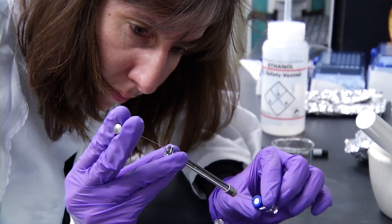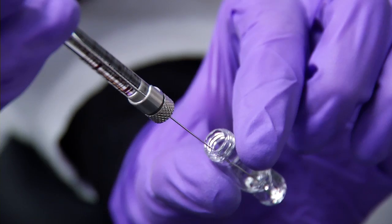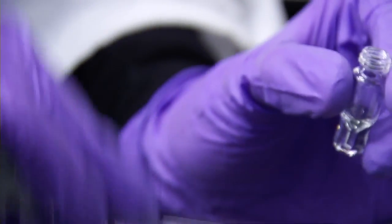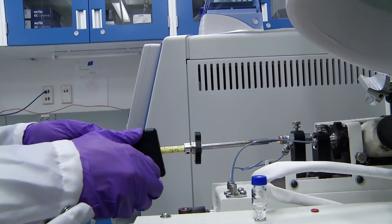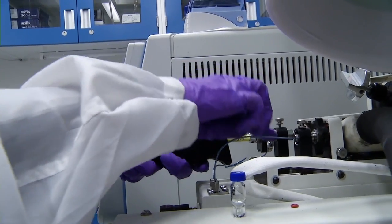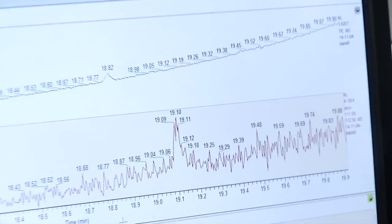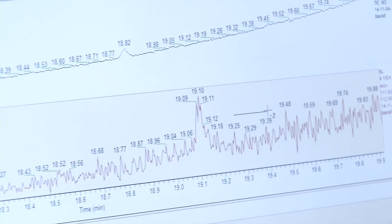In addition to the measurements made by Sam on Mars, we've had to do hundreds of laboratory experiments back on Earth to simulate the conditions on the surface of the red planet in order to convince ourselves that the organic material we were detecting by Sam was really Martian in origin and not something that we had brought with us to Mars.